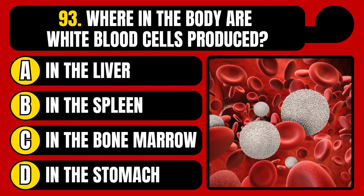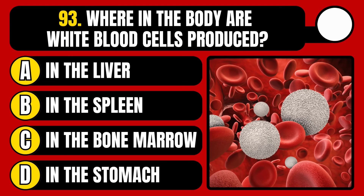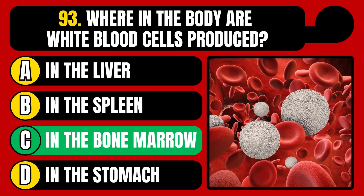Where in the body are white blood cells produced? In the liver, in the spleen, in the bone marrow, or in the stomach? The correct answer is option C, in the bone marrow.